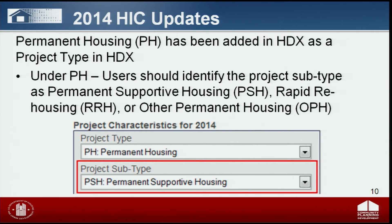The second new reporting requirement is that a new project component, permanent housing (PH), has been added in HDX. Projects previously classified as permanent supportive housing (PSH) or rapid rehousing (RRH) will need to reclassify as permanent housing. The project subtype then needs to be identified as permanent supportive housing, rapid rehousing, or other permanent housing.